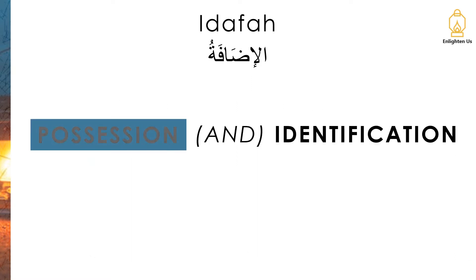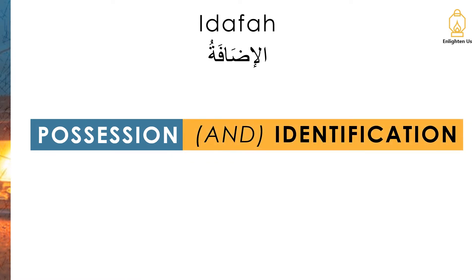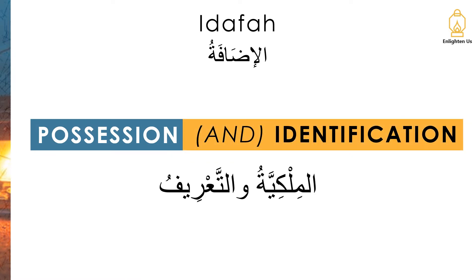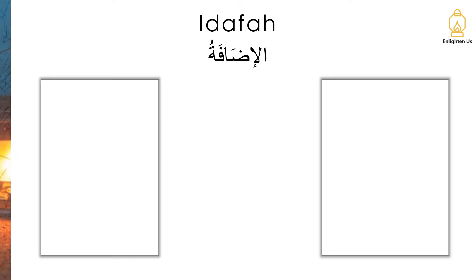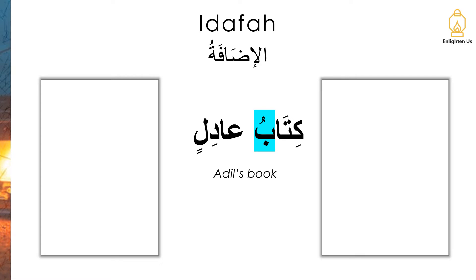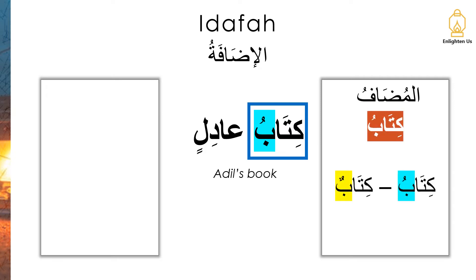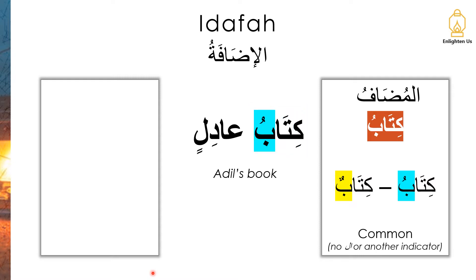Let's start off by looking at some examples for possession and identification — al-milkiya wa ta'arif. Our first example is Kitabu Adil — Adil's book. Kitabu is our mudhaaf. In its original form, Kitabu would have had tanwin. It's also common, so Kitabu meets the requirements of the mudhaaf.